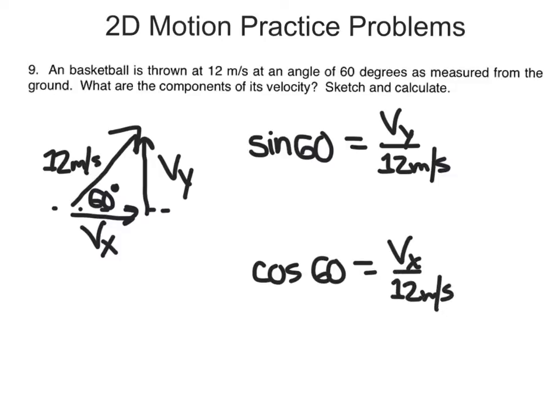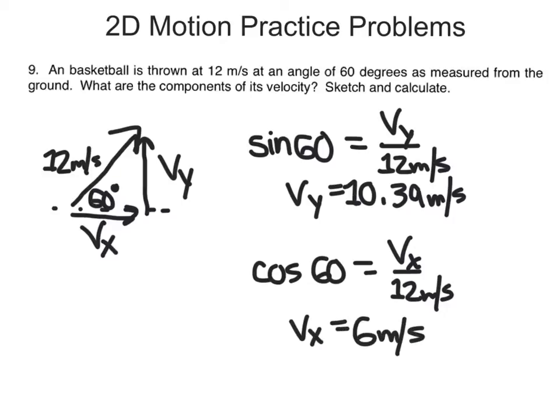So take a moment. You can solve for these. Vy is going to be 12 times sine of 60, and Vx will be 12 times cosine of 60. Make sure your calculator is in degree mode. That gave me a Vy value of 10.39 meters per second and a Vx of 6 meters per second. So those would have been the two velocities that you would have combined, 6 meters per second and 10.39 to do your Pythag to get Vy and tangent to find that angle.